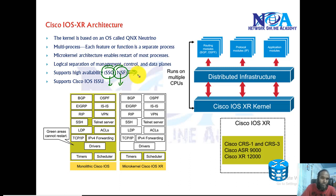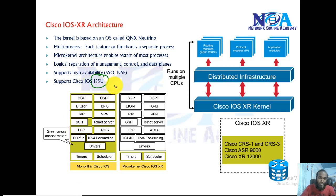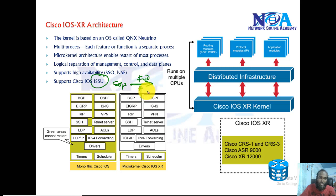With non-stop forwarding, the router can continue forwarding packets and reduce downtime. Additionally, IOS XR supports ISSU — In-Service Software Update — which allows the Cisco IOS software to be updated while the router is running and forwarding packets. You can add patches or upgrades without rebooting the device, which increases network availability in service provider networks and reduces downtime caused by software updates.